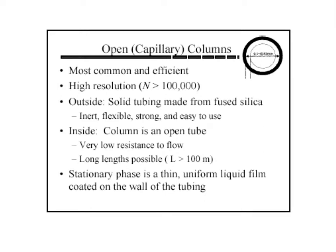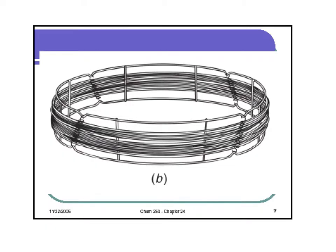A capillary column consists of a thin film of the liquid phase coated onto the inside wall of a very small diameter glass tube. Here you see the cross-section of a capillary column. This column is more like a straw, and the components of the mixture contact the liquid phase on the walls as the gas moves through the center of the column. These columns are typically very long and have many more theoretical plates, greater than 100,000. Columns of this length must be wound many times in order to fit into the instrument. The metal support keeps the thin glass of the column from being crushed or broken.